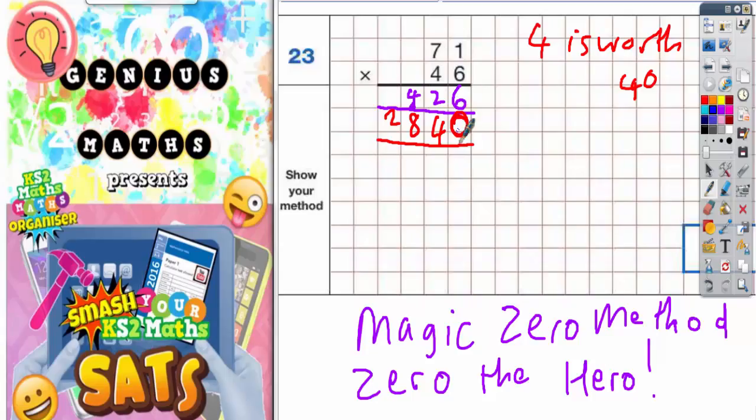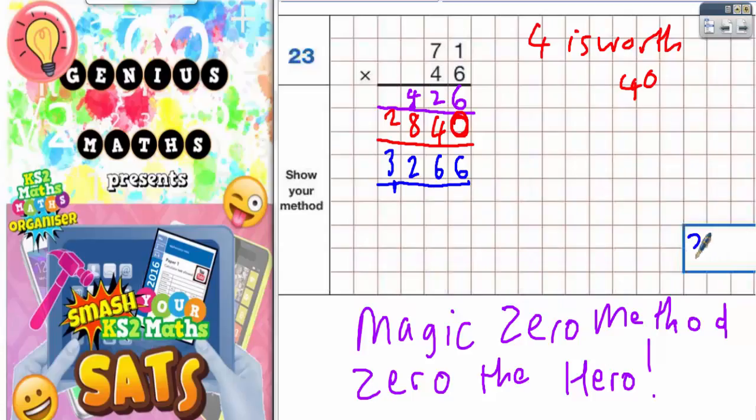So 6 plus 0 is 6. 2 plus 4 is 6. 4 plus 8 is 12. Put the 2 in, carry the 1, and 2 plus the 1 I carry is 3. So your final answer should be 3,266 which needs to go in your answer box.